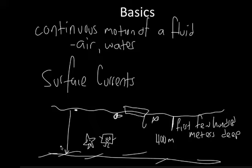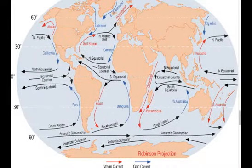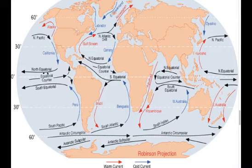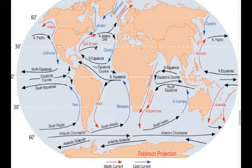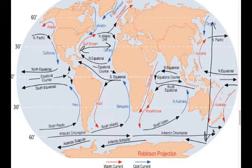Surface currents are the motion of the water right at the surface of the ocean. Here's a world map showing most of the world's large ocean currents. In the Atlantic we have a counterclockwise one and a clockwise one; in the Pacific, a clockwise northern one and a counterclockwise southern one. The question is: why do they make these big circular patterns instead of flowing straight across or from the equator to the poles?